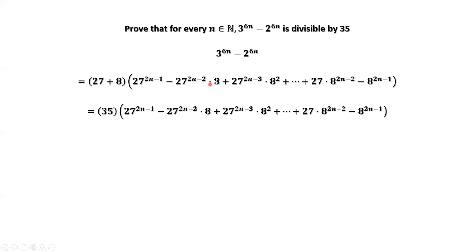What does this mean? 3 to the power 6n minus 2 to the power 6n equals 35 times this integer. Therefore, 3 to the power 6n minus 2 to the power 6n is divisible by 35.